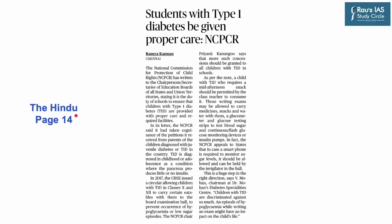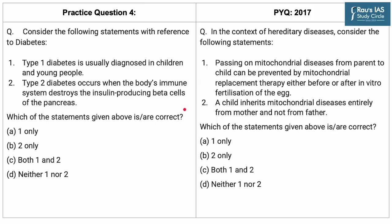Moving on to the fourth article of the day, which appeared on page 14 of The Hindu newspaper. The article reports that the National Commission for Protection of Child Rights has written to the heads of all state and union territory education boards, stating that it is the duty of schools to ensure that children with Type 1 diabetes are provided with proper care and required facilities. Communicable, non-communicable, and genetic diseases are often in the news, as seen in the 2017 PYQ on hereditary diseases. Here is practice question number 4.